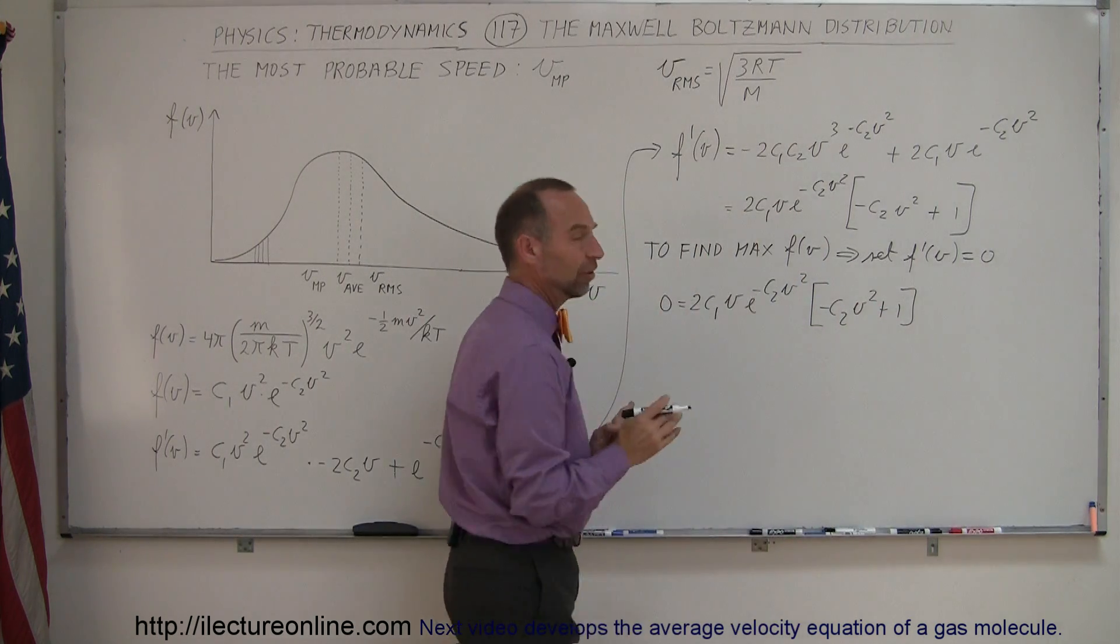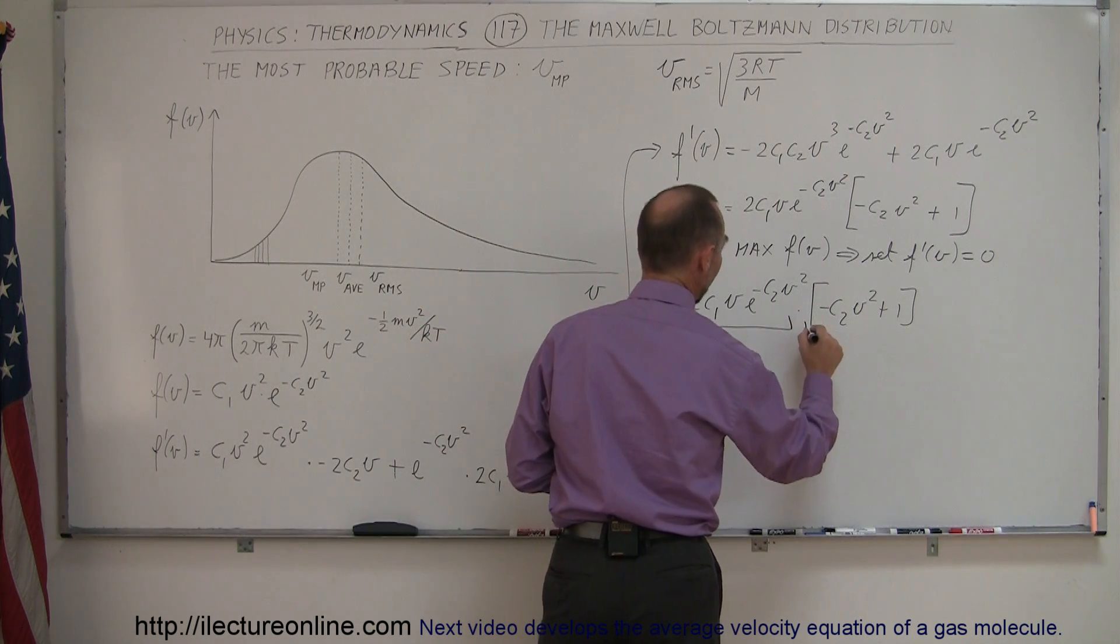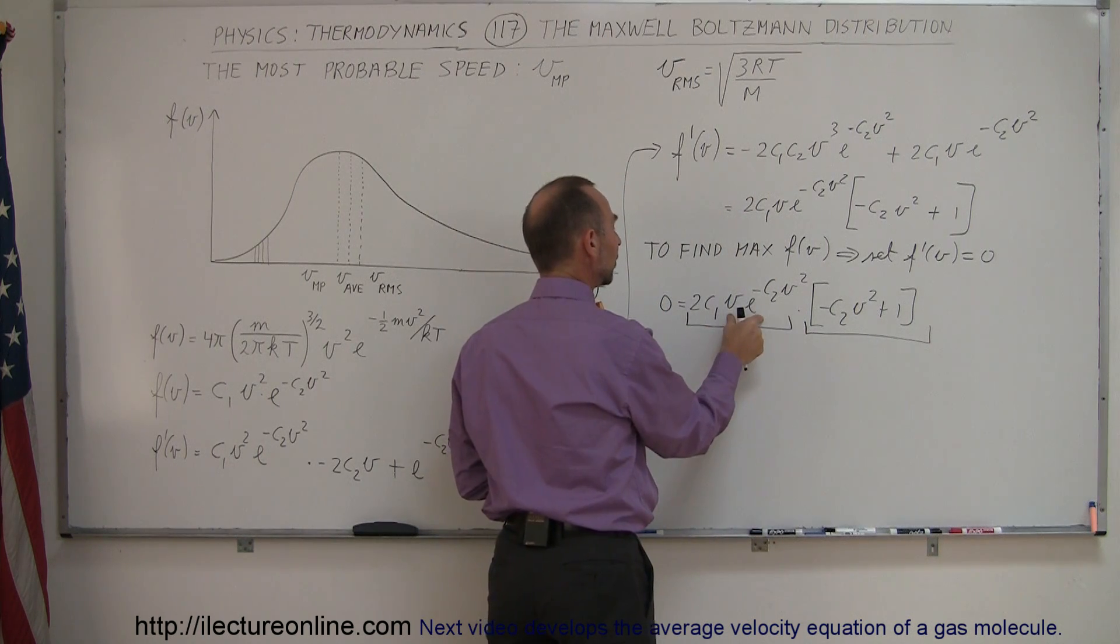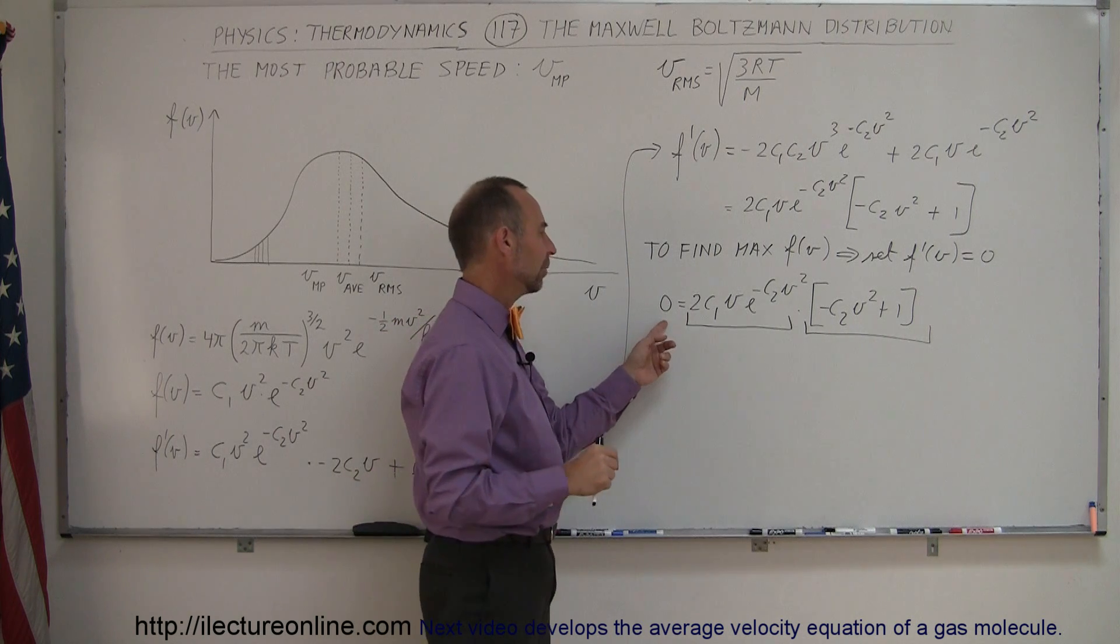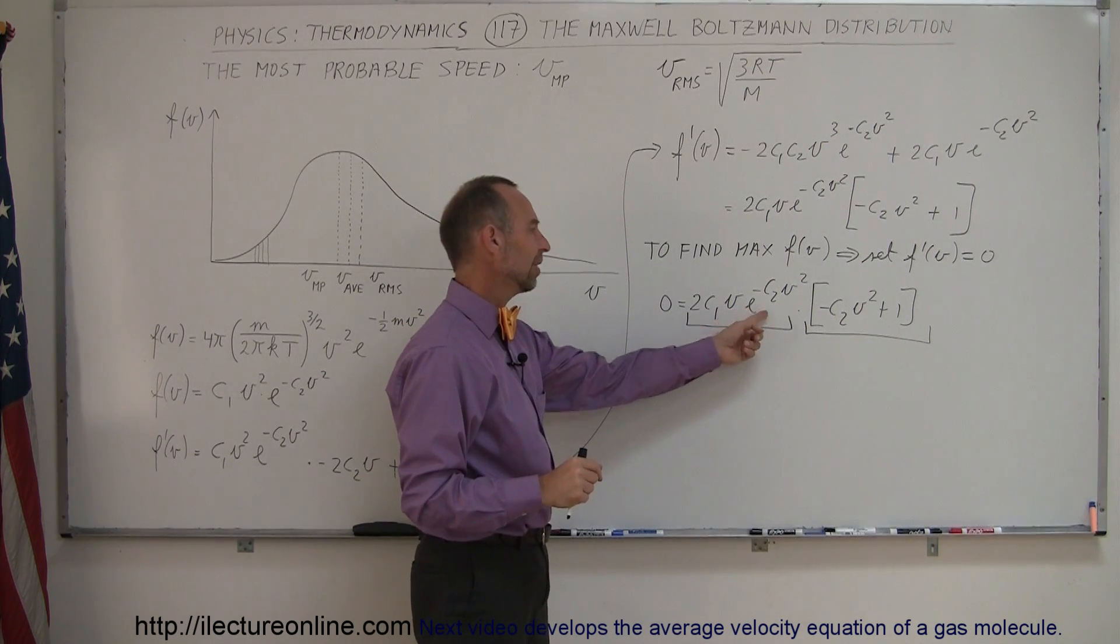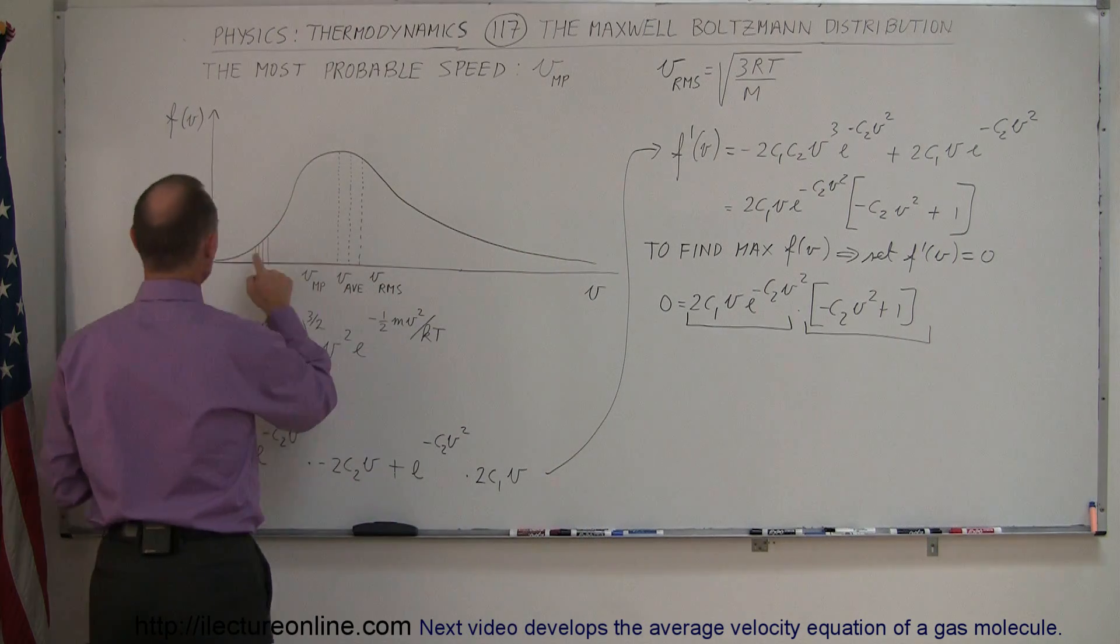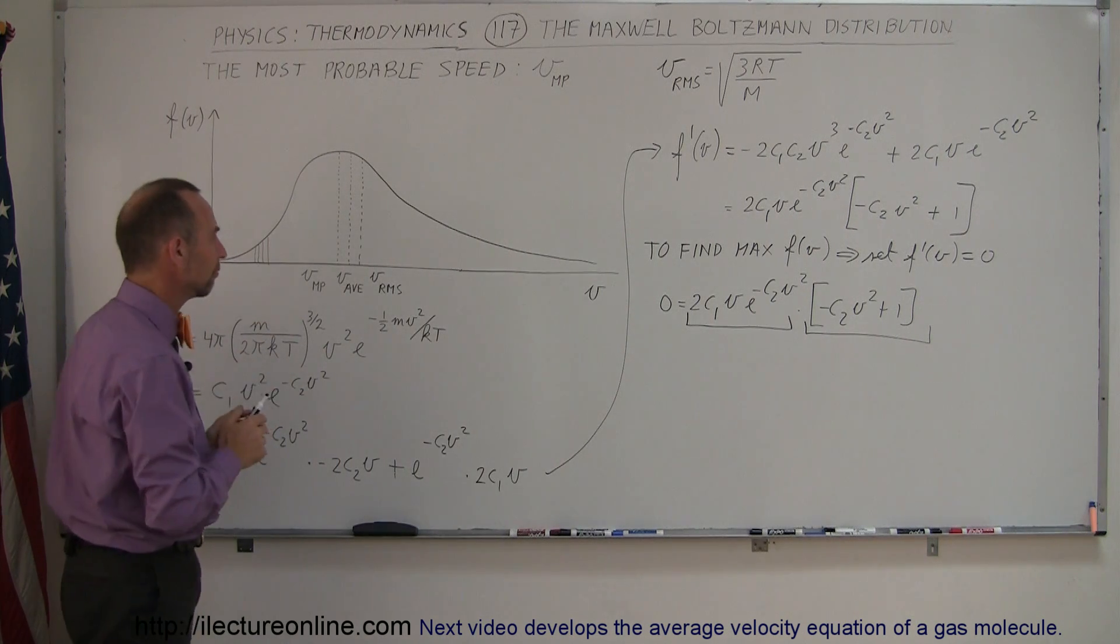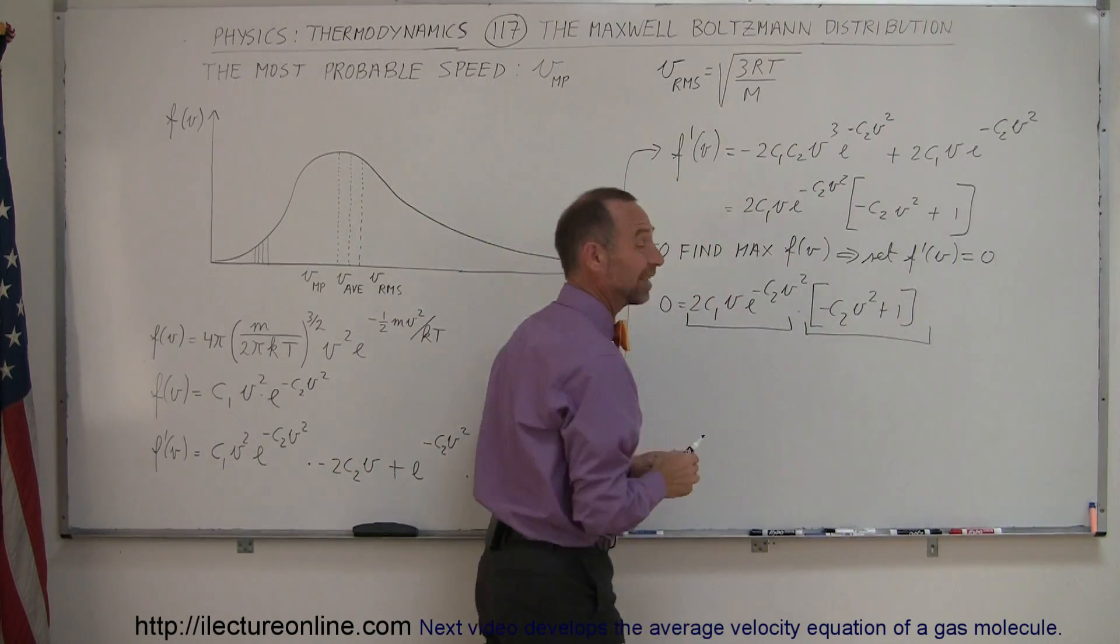So for this to be equal to zero, notice that we have a product. We're multiplying this times this. So for this to be zero, either this must equal zero or that must equal zero. Now for this to equal zero, since we have v times this, v would have to be equal to zero. And yes indeed, if we let v equal to zero, we have ourselves a minimum on the function. That's the lowest value the function can have. So that's not the answer we're looking for. We're looking for the maximum value. So we're going to concentrate on this portion right here.